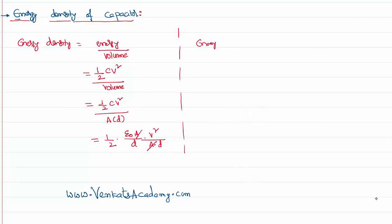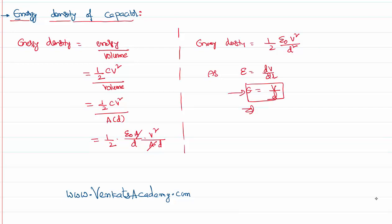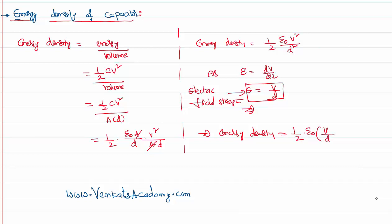Substituting, we get potential squared divided by volume (area times d), so area cancels with area. We can express energy density as half epsilon naught times the potential difference squared divided by distance squared. We know the relation for electric field intensity E equals dV/dr, which gives us V divided by d, where d is the distance between the plates. That implies in place of V/d we can write electric field intensity E.